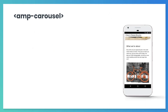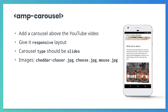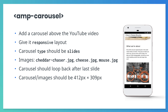Now let's make this carousel. We'll add it under the p-class equals main text element, just above the YouTube video. Set the layout attribute of the carousel to responsive. Set the type attribute of the carousel to slides. Add three images to the carousel: CheddarChaser.jpg, Cheese.jpg, and Mouse.jpg. Make the carousel loop back to the beginning if a user tries to advance beyond the last slide. Give the carousel a width of 412 and a height of 309, and give each image that same width and height: 412 and 309. Now pause the video and try this out.